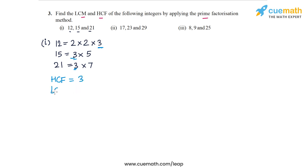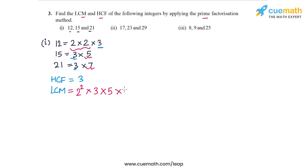To find the LCM, we will take the product of the largest power of each prime factor in the set of numbers. 2 occurs twice in the first number and does not occur in the other two, so in the LCM it will occur as 2 squared. 3 occurs once in each of the three numbers, so it will occur once in the LCM. 5 occurs once in the second number, and 7 occurs once in the third number, so both will occur once in the LCM. The LCM will be 2 squared into 3 into 5 into 7, which equals 420.